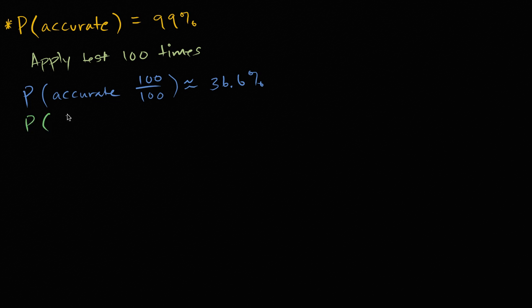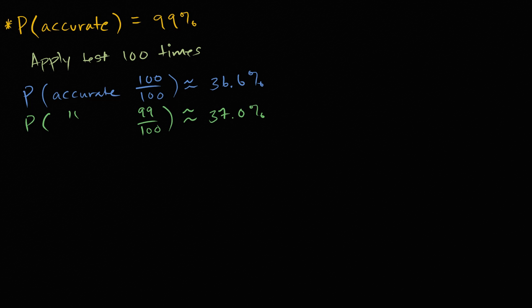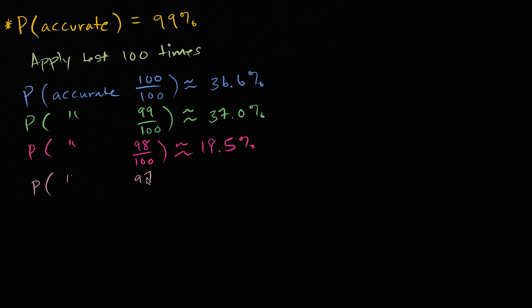We can keep going. The probability that it is accurate 98 out of 100 times is approximately 18.5%. The probability that it is accurate 97 out of 100 times, which I calculated ahead of time, is 6%. So it's definitely in the realm of possibility, but the probability is much lower than having 99 or 100 out of 100 being accurate.